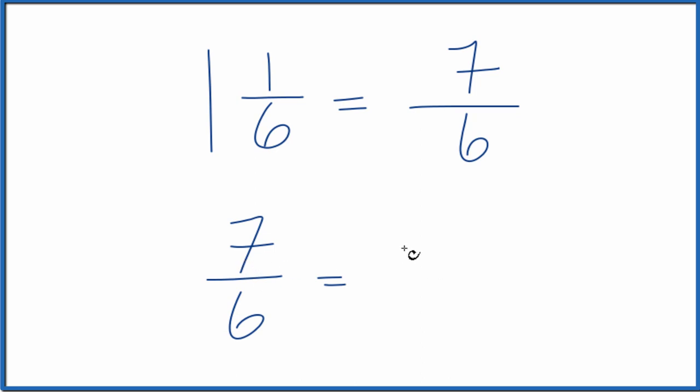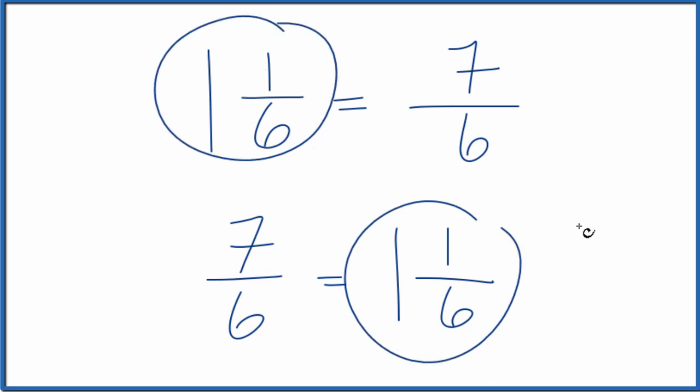6 goes into 7 one time with 1 left over. Then we just bring the denominator across. We get 1 and 1/6. That's equal to the improper fraction 7/6, and this is what we started with. So we did this correctly.